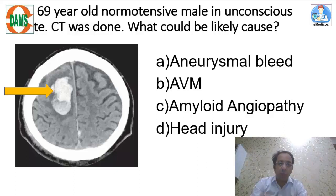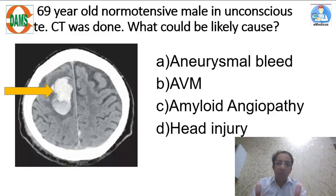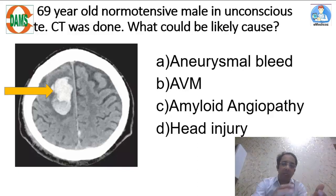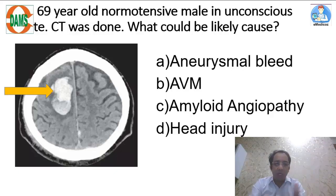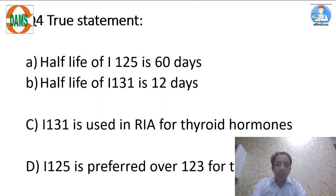Head injury leads to contusions in the basifrontal region — the base of the frontal lobe, not the top. The base of the frontal lobe is in contact with the rough orbital plate of the frontal bone, so when the brain hits that area, a contusion forms there. This is not a typical site of contusion, so the answer is amyloid angiopathy.